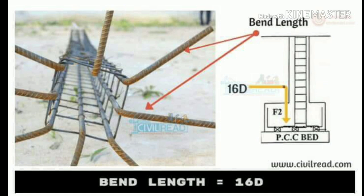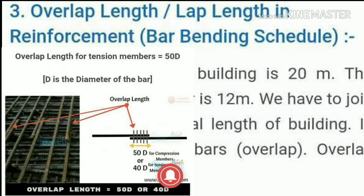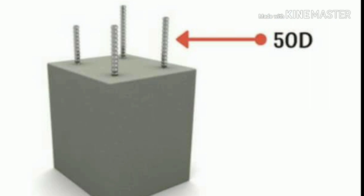16 into 0.016, this is equal to 20mm. 16 into 0.02 is 25mm. 16 into 0.025. This is reinforcement, and it also works in development length. If the length is 50D and the diameter is 18, the length has 50D with a volume of 25.